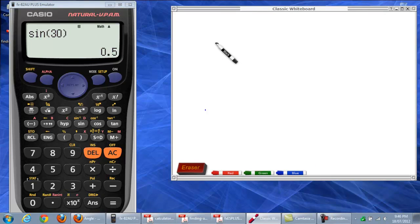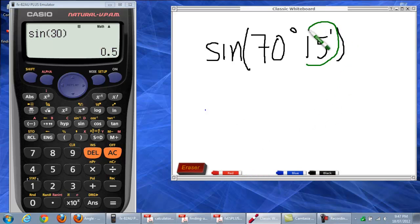So, we've got, we want to work out sine 70 degrees and 15 minutes. Okay, so the long way. So, we can take this, that's the 15 minutes. 15 divided by 60. Use your calculator. 15 divided by 60 is 0.25.